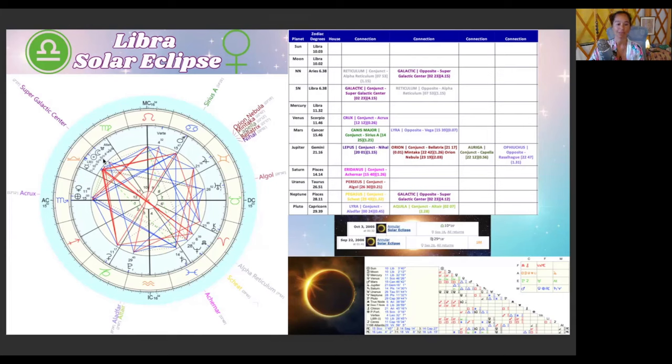We have another grand trine here in water with Venus, the ruler of this eclipse in Scorpio, the mystical magical Scorpio, Saturn retrograde in Pisces, and Mars in Cancer. This is a superstar alignment, given the stars that these planets are aligned to. Venus with a Crux star, very mystical, magical, intuitive, but with a real worldly sensibility to her.